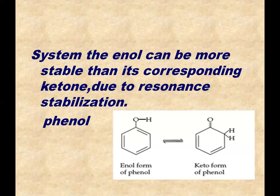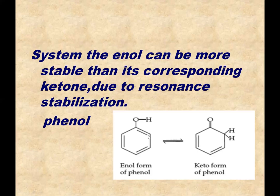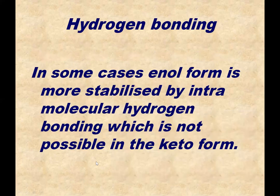On the basis of bond energy, keto form is more stable, but when the enolic double bond is part of a conjugated system, the enol becomes more stable due to resonance stabilization. That is why phenol exists almost entirely in its enol form — essentially 100% enol form — because the enolic double bond is part of the conjugated benzene ring system, giving it 150 kJ/mol of resonance energy.